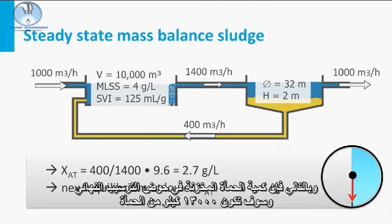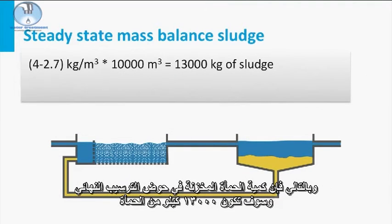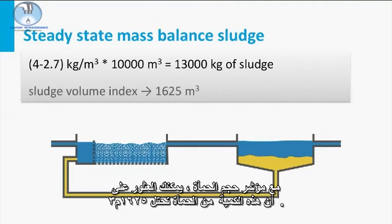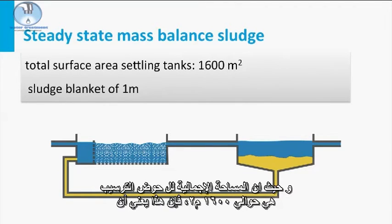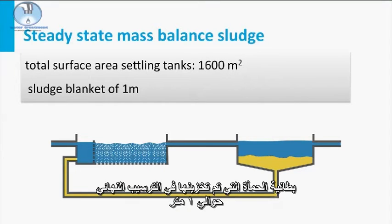So the amount of sludge stored in the final clarifier will be 13,000 kilograms of sludge. With the sludge volume index you can find that this amount of sludge will take 1625 cubic meters. Since the total surface area of the two settling tanks is around 1600 square meters, this would mean that the sludge blanket that is stored in the final clarifier is approximately 1 meter.